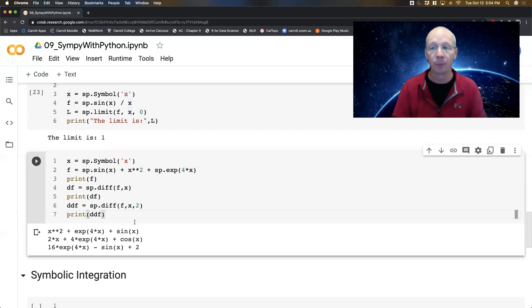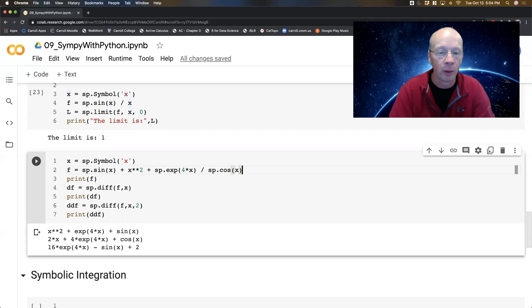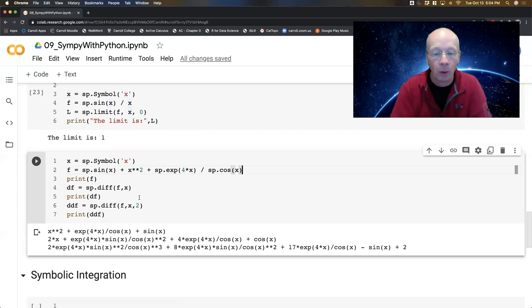You can throw in quotients in here if you wanted to as well. It knows the quotient rule just like everybody else does. So if I threw in a cosine in there. Now, these are a little bit gross to look at, but that's okay. That's perfectly fine.